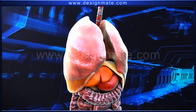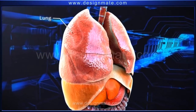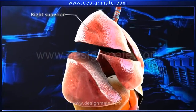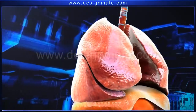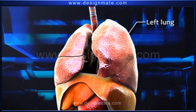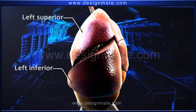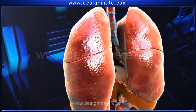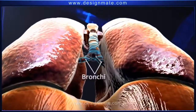Present within the ribcage are the pleural membranes which enclose the lungs. The right lung is divided into three lobes: the right superior, right middle, and the right inferior lobe. The left lung is smaller and has only two lobes: the left superior and the left inferior lobe.